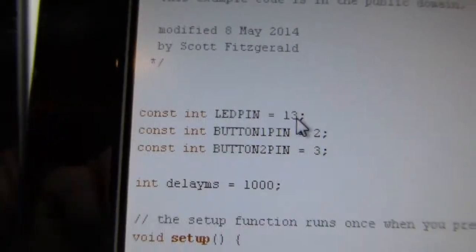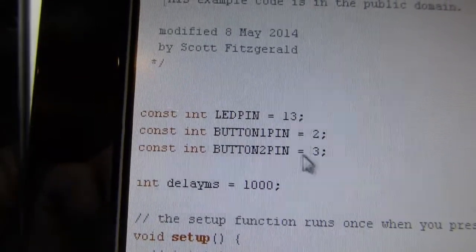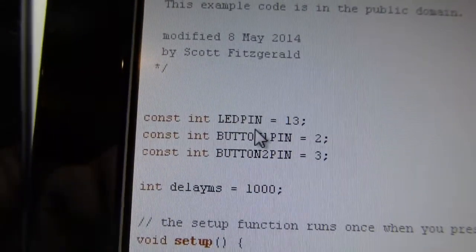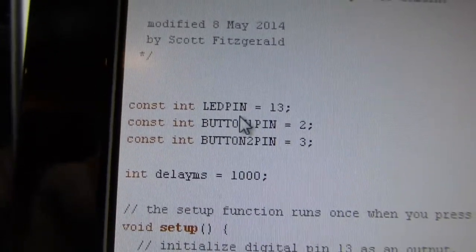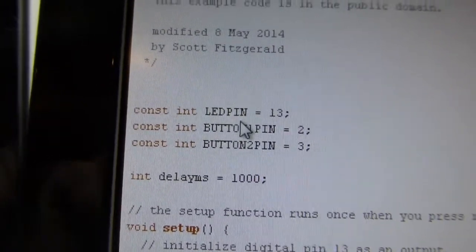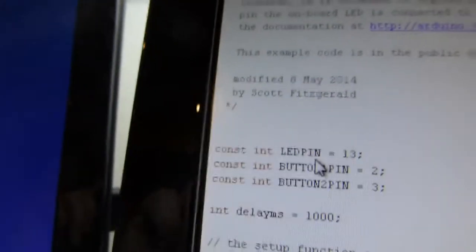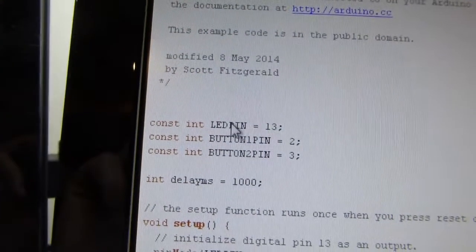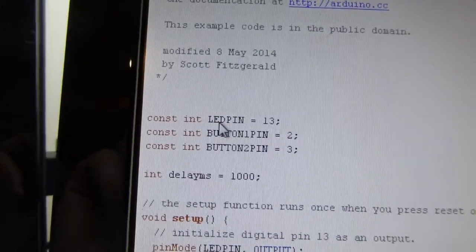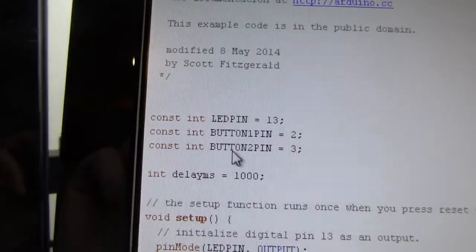In fact it'll keep you from making mistakes later on if you accidentally try to change the value of LED pin. The software will stop you from doing that. It'll generate an error when you try to compile the software. So that's the reason that you want to do this. You see I have to define LED pin button one and button two pin.